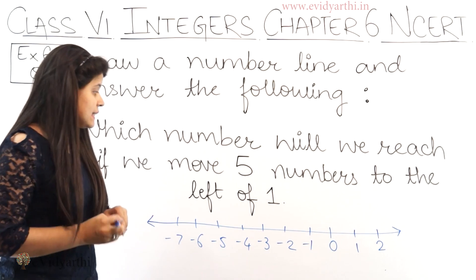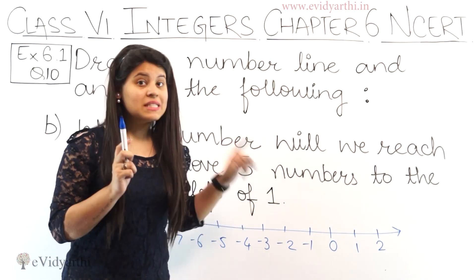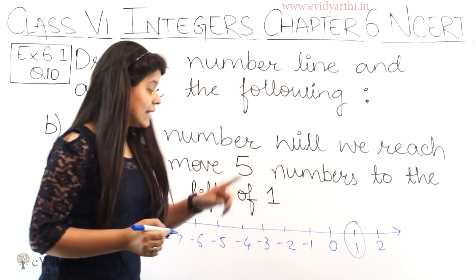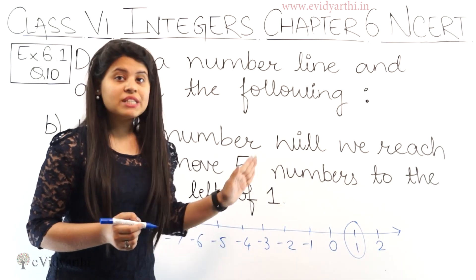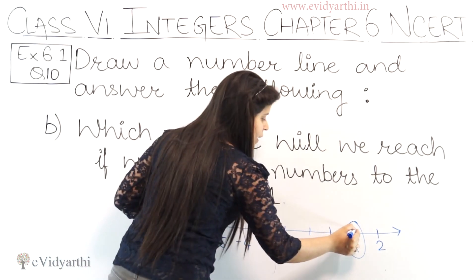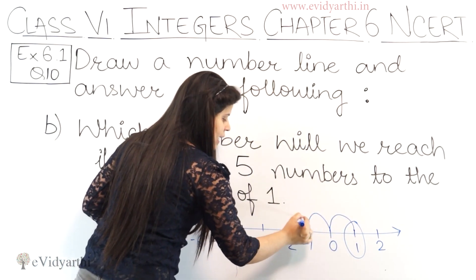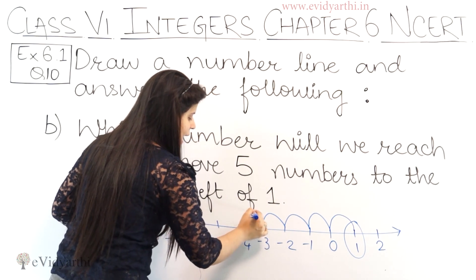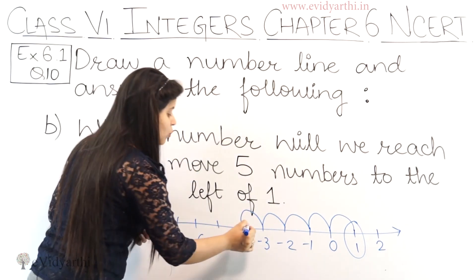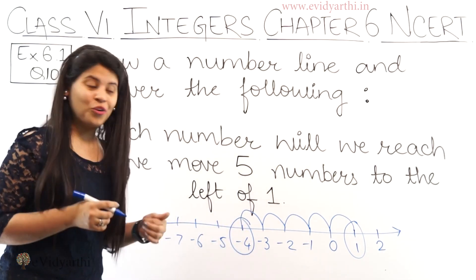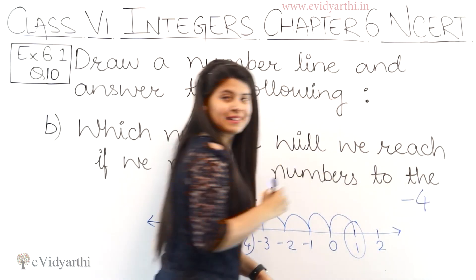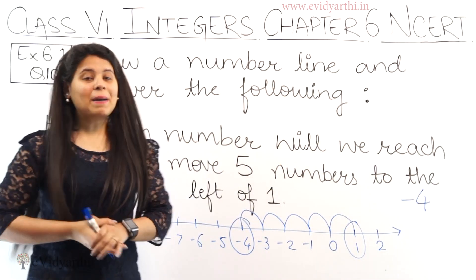Now we have to start with point 1. Here we have number 1. From 1, you have to come 5 steps to the left side: 1, 2, 3, 4, and 5. After 5 steps to the left, which number have we reached? Minus 4. So the answer will be minus 4. This was part B.